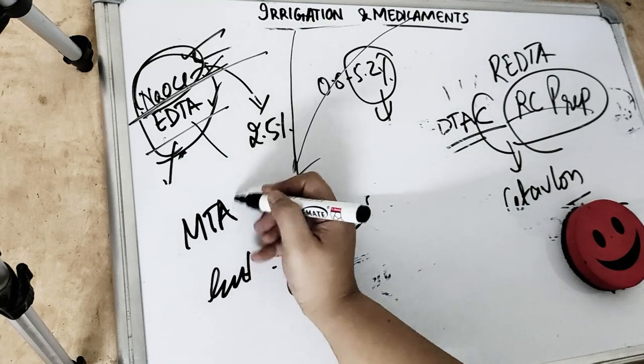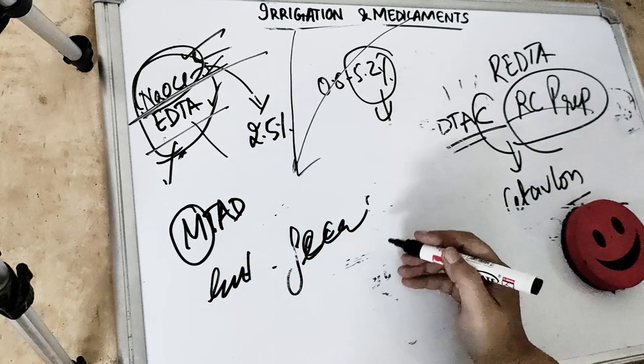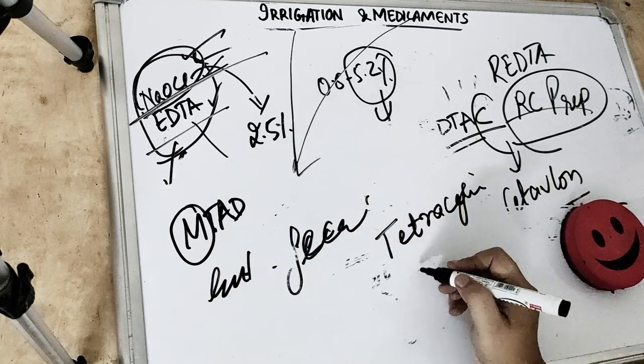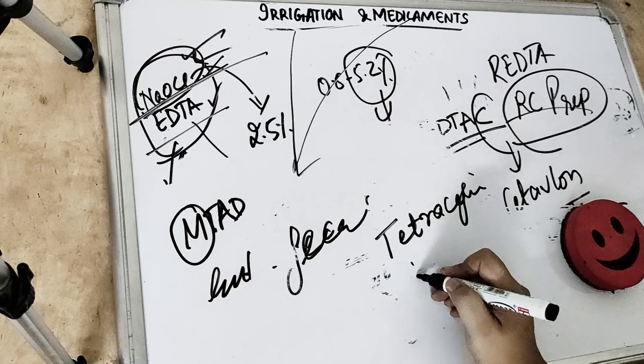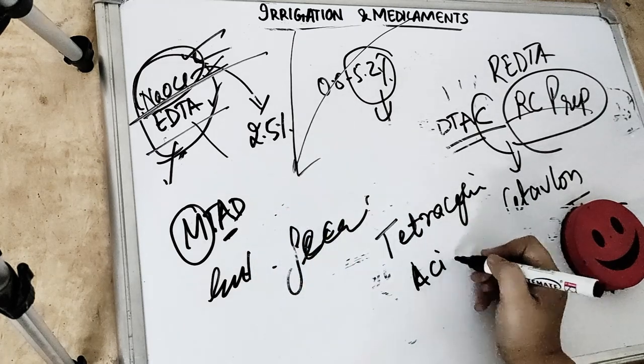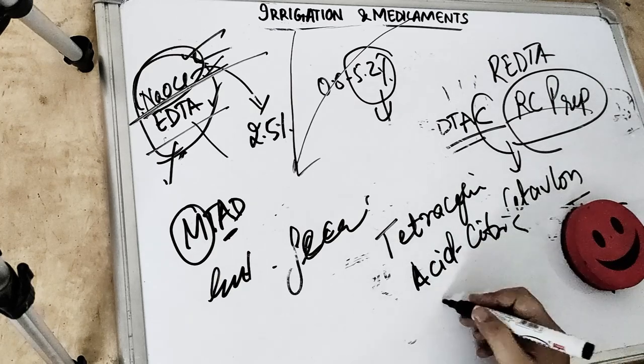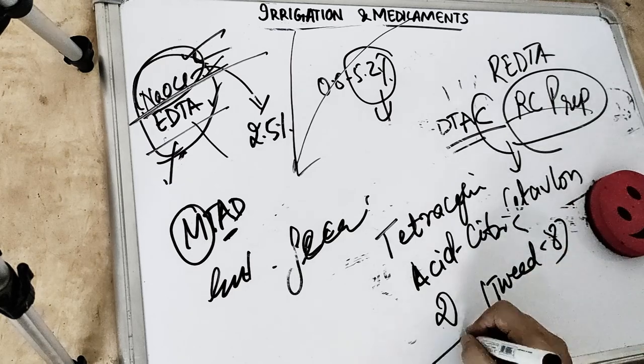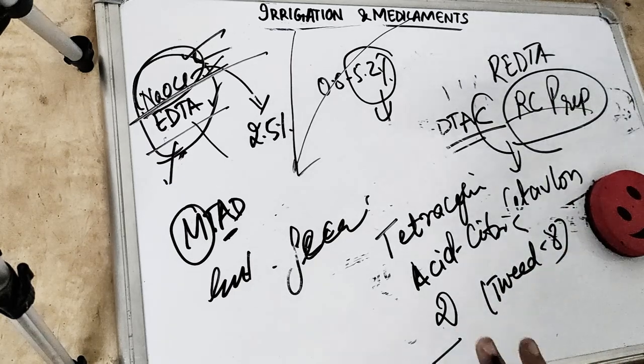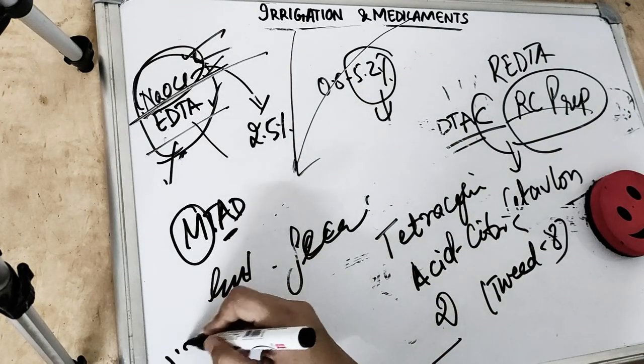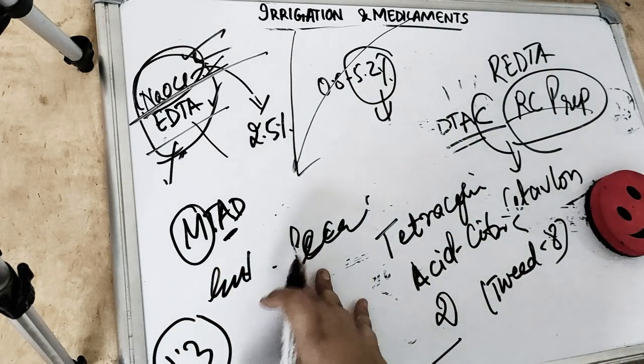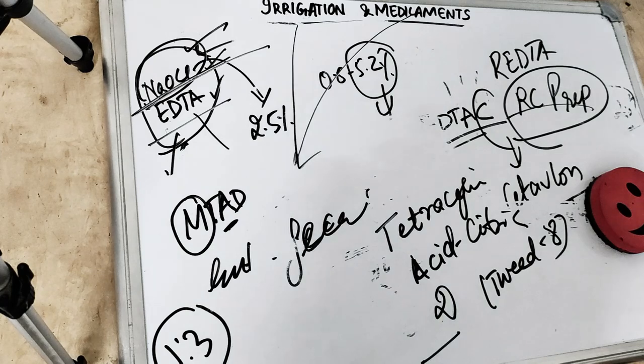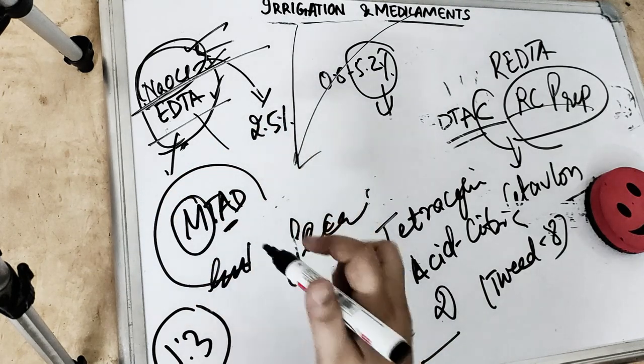Next one is MTAD. MTAD is mixture. M stands for mixture. T stands for tetracycline. So it is mixture of tetracycline. Then we have citric acid, A stands for acid. And D for detergent, we use Tween 80 detergent. Now what we do: finally after using 1 to 3 concentration of sodium hypochloride, then we use the irrigant. After using the irrigant, we finally rinse and remove the smear layer with MTAD.